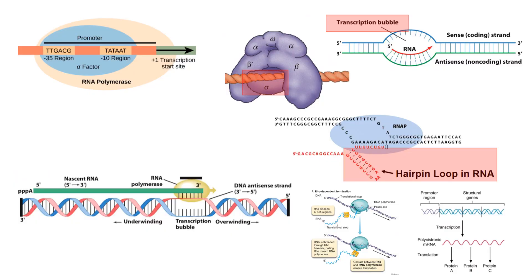In prokaryotic transcription, multiple genes are arranged along what's called a promoter region. Promoters have a starting sequence and can transcribe multiple related genes at once. For example, if genes are related to glucose, one might regulate transporters to bring more glucose in and another might store it. A promoter makes this more efficient — it kind of makes things easier by grouping related genes together.